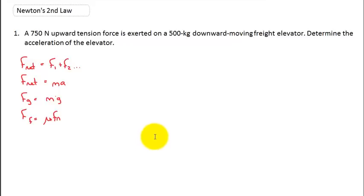Hey guys, this is Mr. Post, and on today's video we'll be checking out a Newton's Second Law problem. In this problem, we have a 750 Newton upward tension force exerted on a 500 kilogram downward moving freight elevator, and we're looking to determine the acceleration of the elevator.